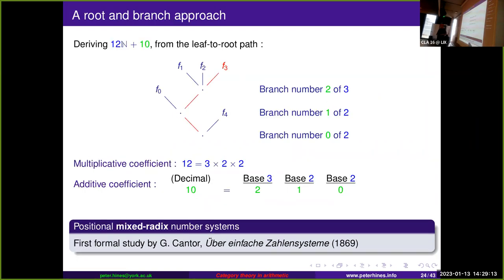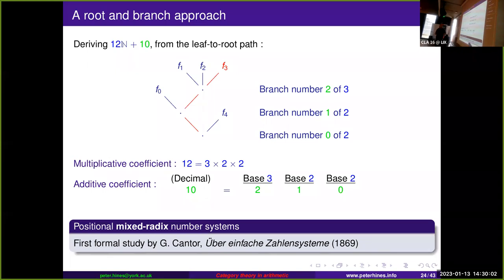It's as simple as counting. We take our leaf and look at the path from the leaf to the root. For the multiplicative coefficients, we look at the number of branchings — 3, 2, 2 — and multiply them together, giving 12. For the additive coefficients, we look at the branch taken, labeling them 0, 1, 2, 0, 1, 0, 1, giving us 2, 1, 0. But we're not writing this in decimal — we write it in a mixed-radix counting system, with a different base for each column equal to the number of possible branchings. The value in each column is the branch taken, so binary-binary-ternary 2-1-0 is 10 in decimal.